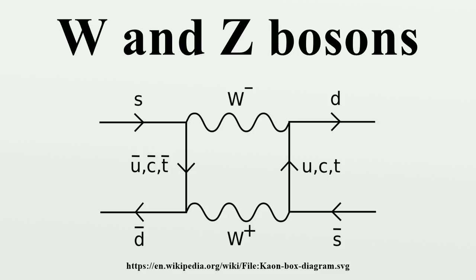These particles are accurately described by an SU(2) gauge theory, but the bosons in a gauge theory must be massless. As a case in point, the photon is massless because electromagnetism is described by a U(1) gauge theory. Some mechanism is required to break the SU(2) symmetry, giving mass to the W and Z in the process. One explanation, the Higgs mechanism, was forwarded by the 1964 PRL symmetry breaking papers. It predicts the existence of yet another new particle, the Higgs boson. Of the four components of a Goldstone boson created by the Higgs field, three are eaten by the W+, Z⁰, and W- bosons to form their longitudinal components, and the remainder appears as the spin-zero Higgs boson.